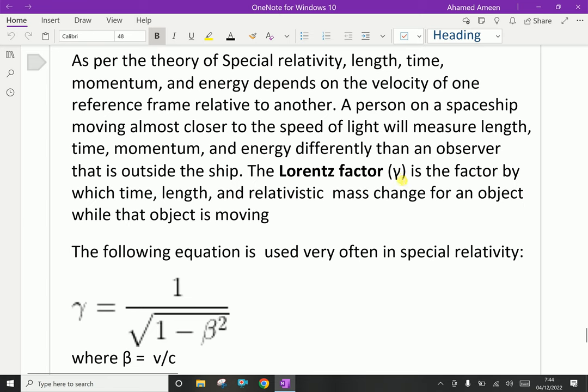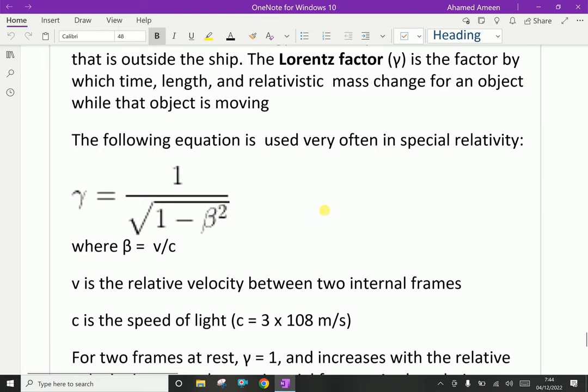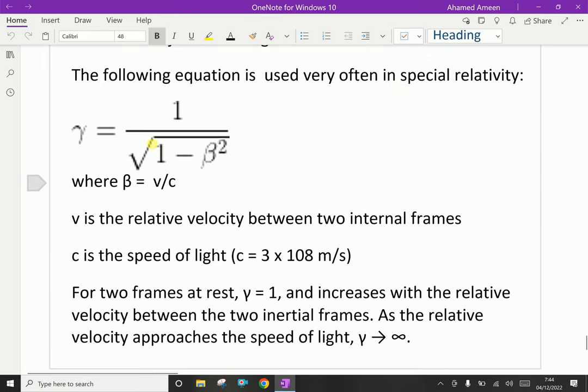The Lorentz factor gamma is the factor by which time, length, and relativistic mass change for an object while that object is moving. The following equation is used very often in special relativity: gamma equals one over square root of one minus beta squared, where beta equals v/c, the ratio of velocity of any object to the velocity of the speed of light. Its ratio is very small because nobody can reach the speed of light.